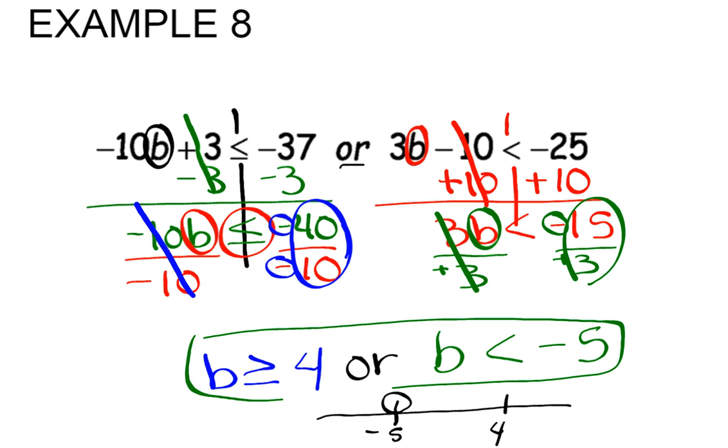Negative 5 would have an open dot. 4 would have a closed dot. 4 is greater than, so the arrow is going to be going to the right. Negative 5 is less than, so the arrow is going to be going to the left. And that's what it would look like graphed on a number line.